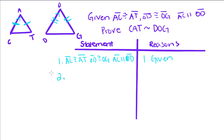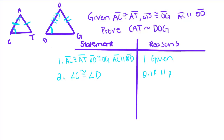The first thing we can do is, since these two lines are parallel, we can get this angle congruent to this angle. If two lines are parallel, corresponding angles are congruent. So angle C is congruent to angle D. Our reason is: if lines are parallel, corresponding angles are congruent.